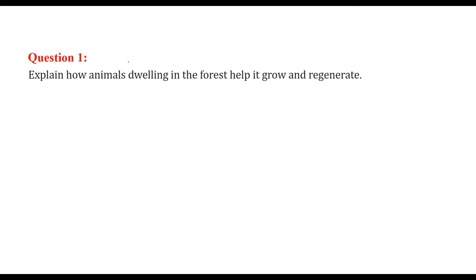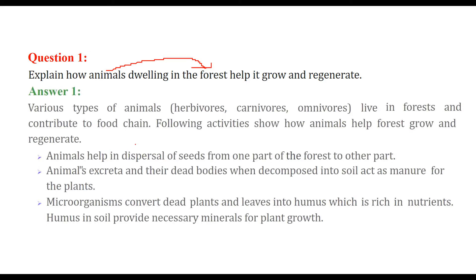First question: explain how animals dwelling in the forest help it grow and regenerate. There are various ways. Animals may be herbivorous, carnivorous, or both — omnivorous. They live in the forest and every one of them is part of the food chain.